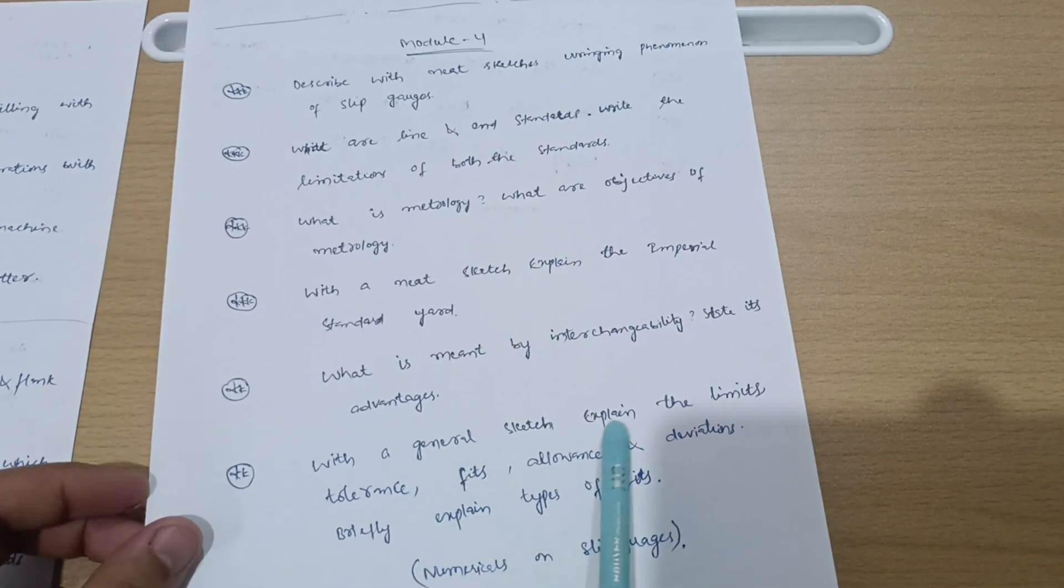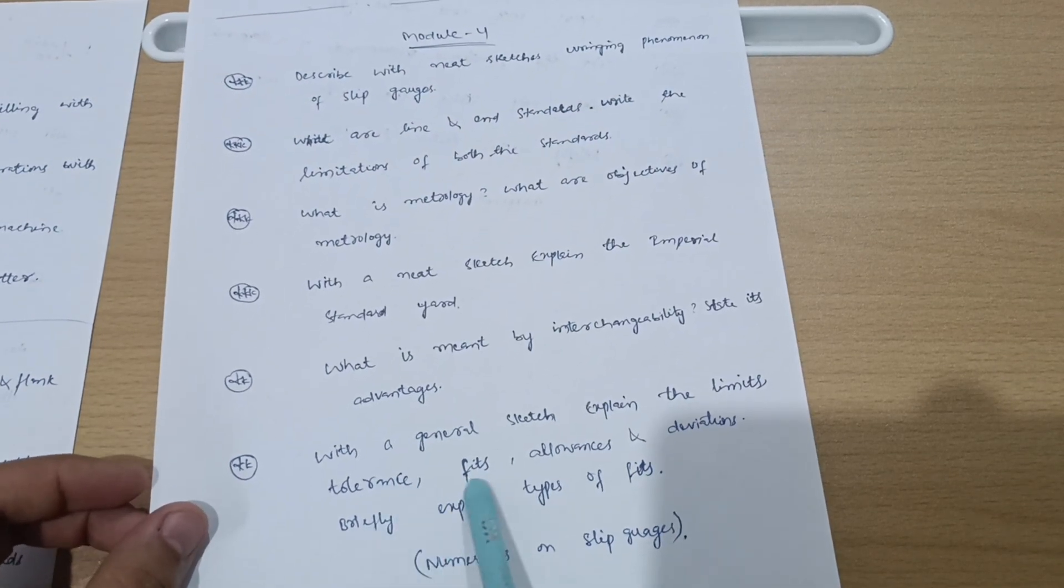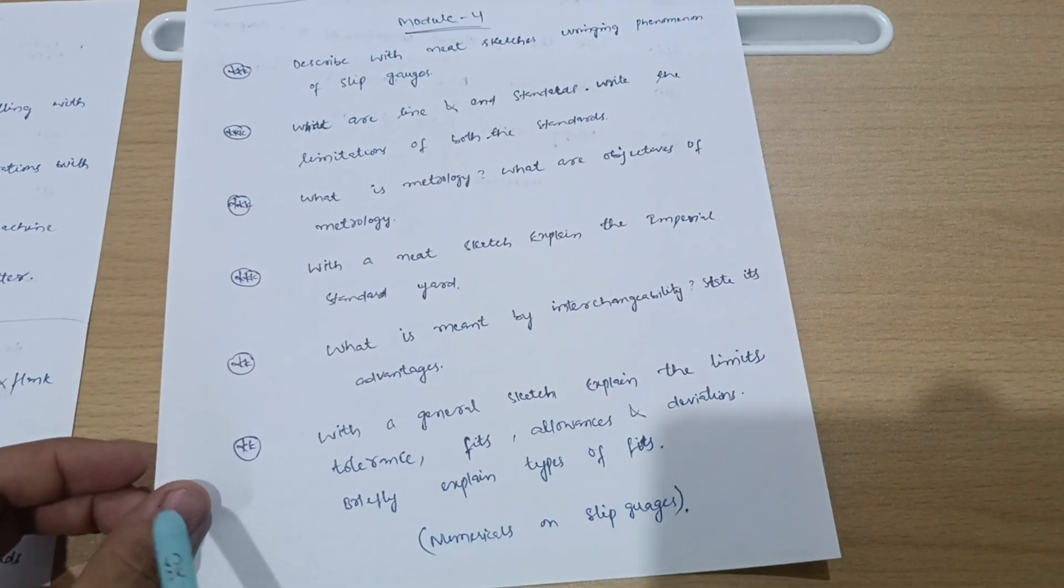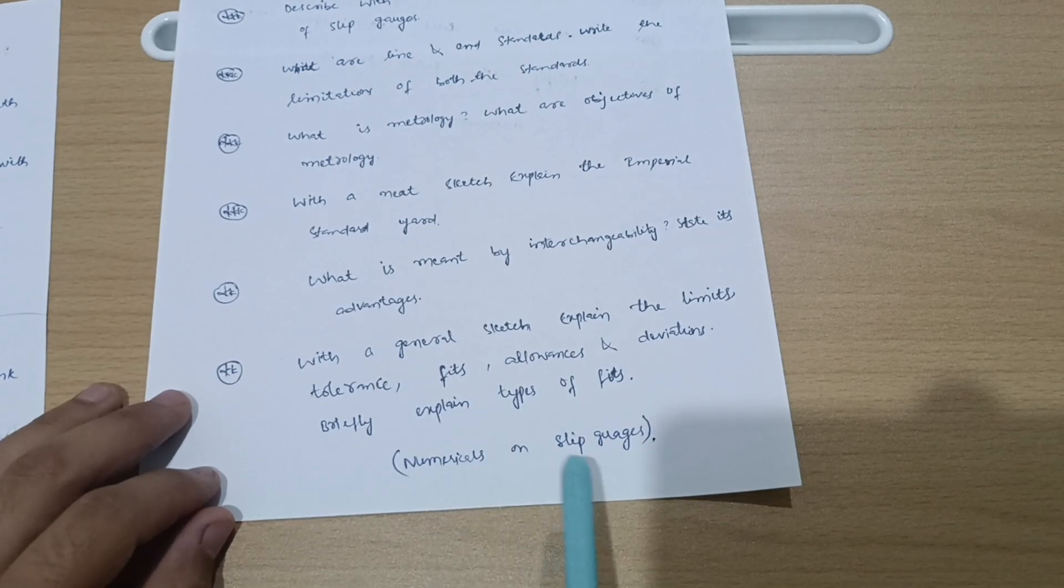What is meant by interchangeability? State its advantages. With a general sketch, explain the limits, tolerance, fits, allowances, and deviations, and briefly explain types of fits. Numericals are very easy in Module 4. You should refer numericals also. Don't neglect the numerical part. Simpler ones are there.